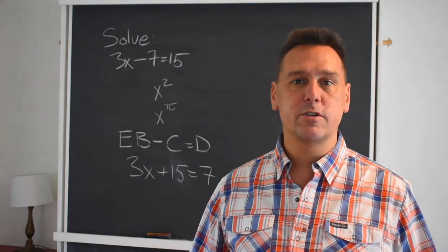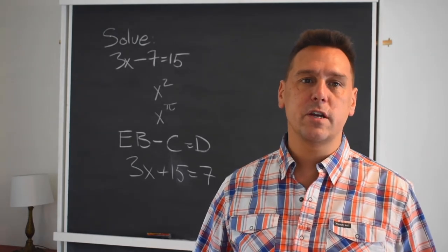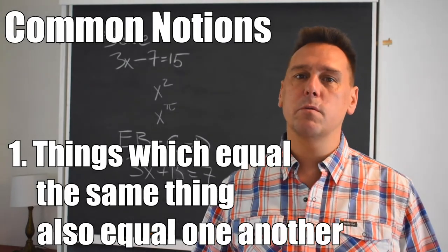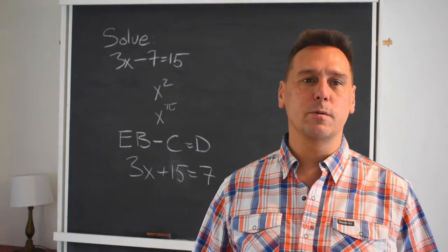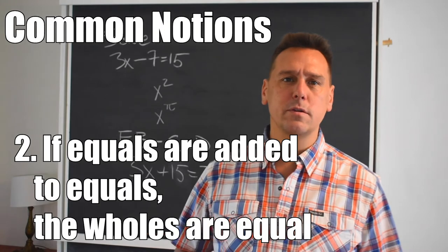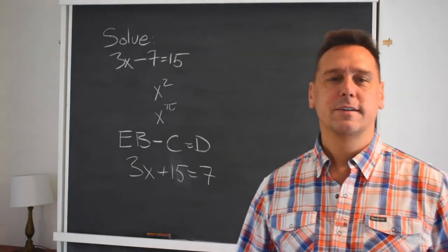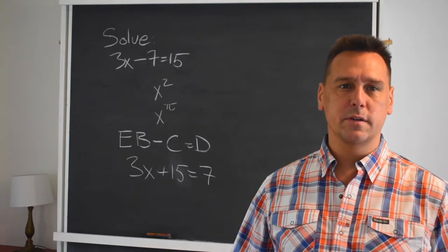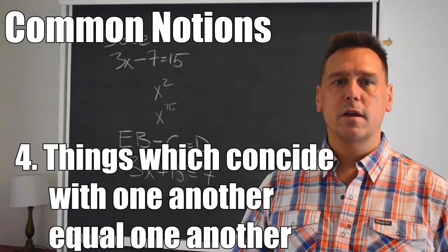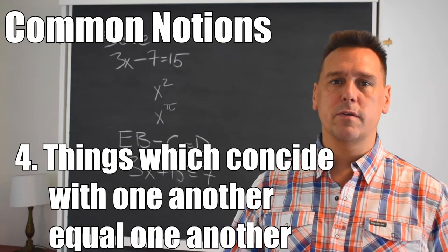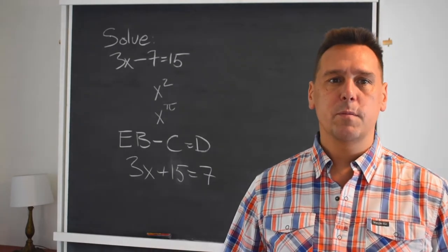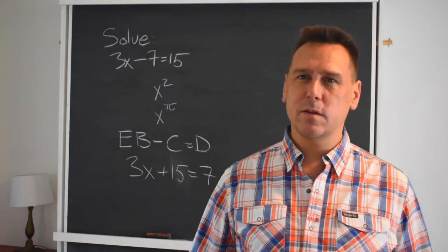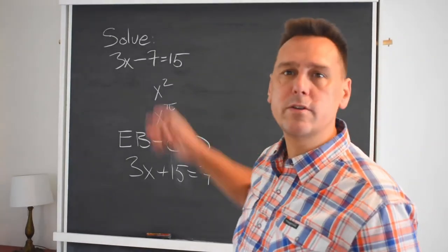Here's a list of the common notions, the basic assumptions that are general in nature. Common Notion 1: Things which equal the same thing also equal one another. Common Notion 2: If equals are added to equals, then wholes are equal. Common Notion 3: If equals are subtracted from equals, then the remainders are equal. Common Notion 4: Things which coincide with one another equal one another. Common Notion 5: The whole is greater than the part. Pretty simple, right? And maybe it sounds a little bit like what you're allowed to do to equations in algebra.